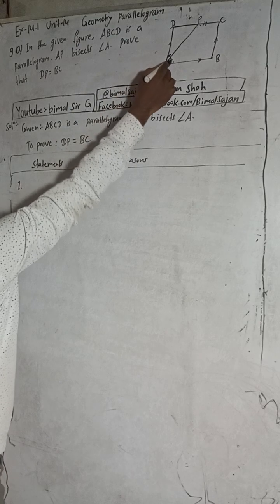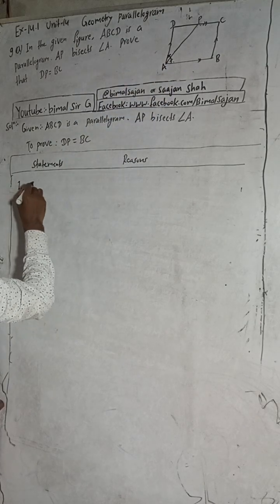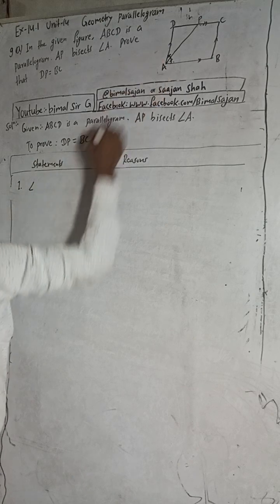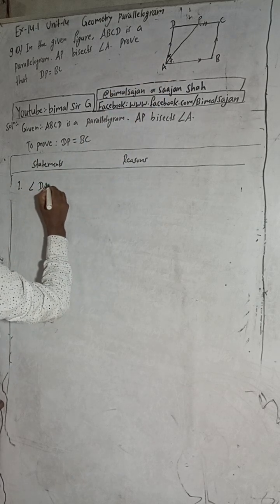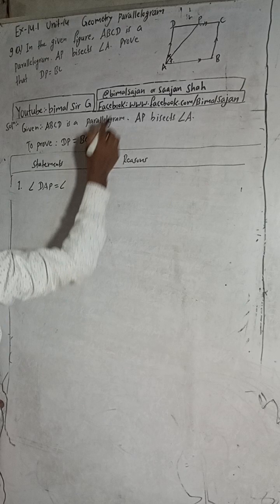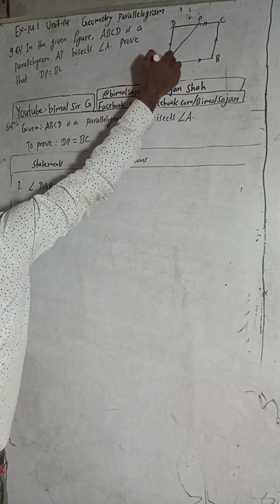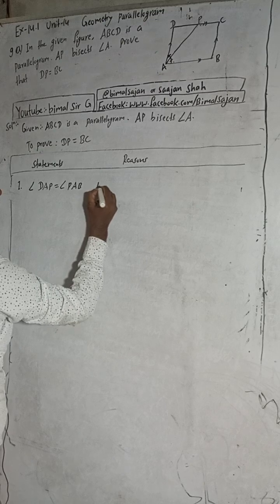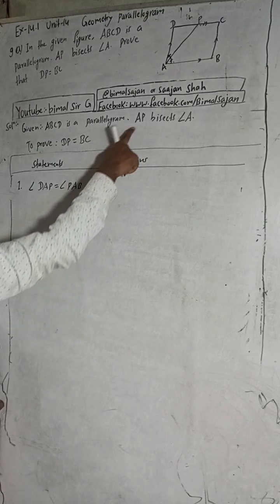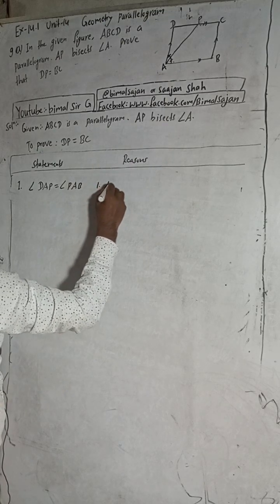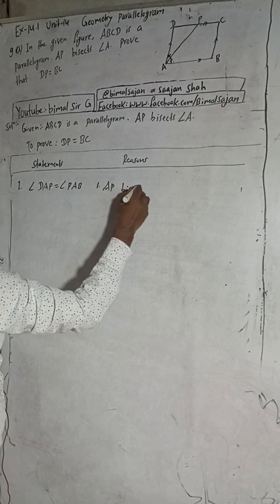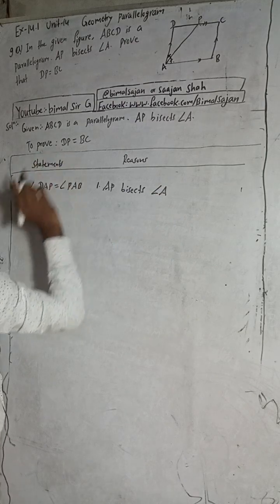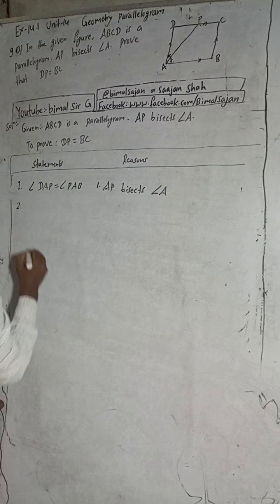Now, we can write here: angle DAP is equal to angle PAB. The reason for this is that AP bisects angle A, meaning both angles are equal. This is statement number 1.